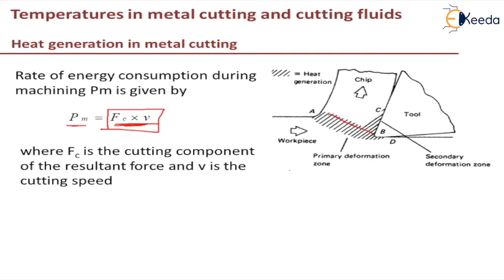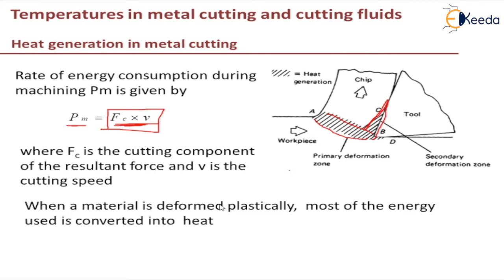We are familiar with this sketch, which we have studied in module one also. We have a primary deformation zone and a secondary deformation zone where friction between the tool and the chip takes place. When the material is deformed elastically, the energy required for operation is stored in the material as strain energy — during elastic deformation, the energy supplied is stored as strain energy.